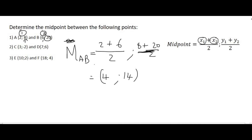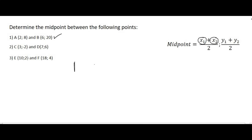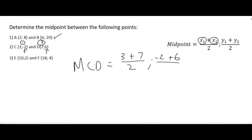Moving on to the midpoint of C, D, calling C point 1 and D point 2 and using the formula: the x values are 3 and 7, and the y values are minus 2 and 6. So 3 plus 7 is 10, divided by 2 is 5; and minus 2 plus 6 is 4, divided by 2 is 2. The midpoint of C, D is (5, 2).